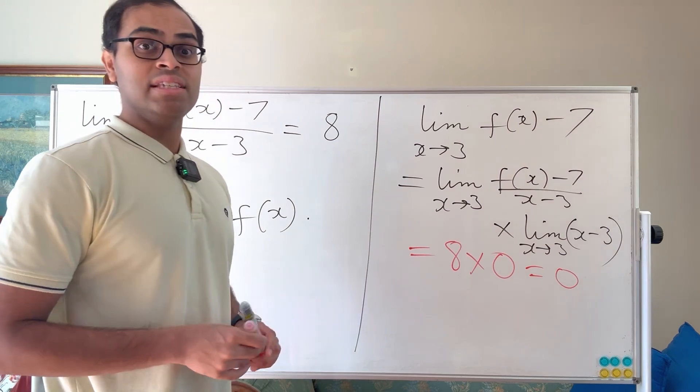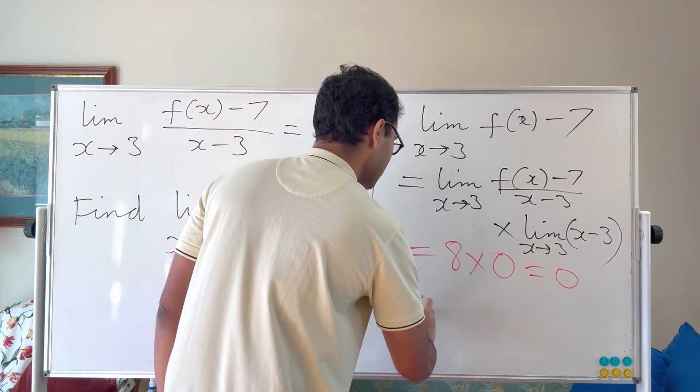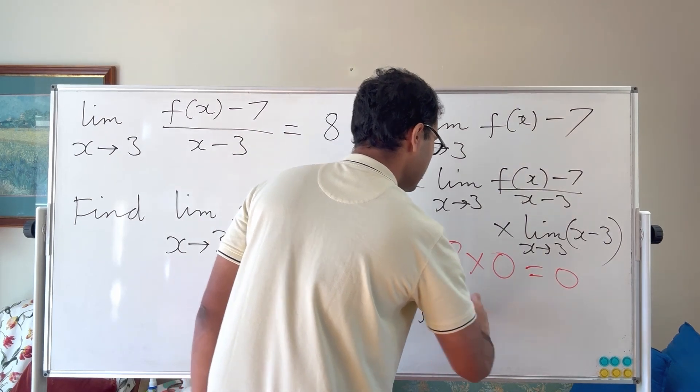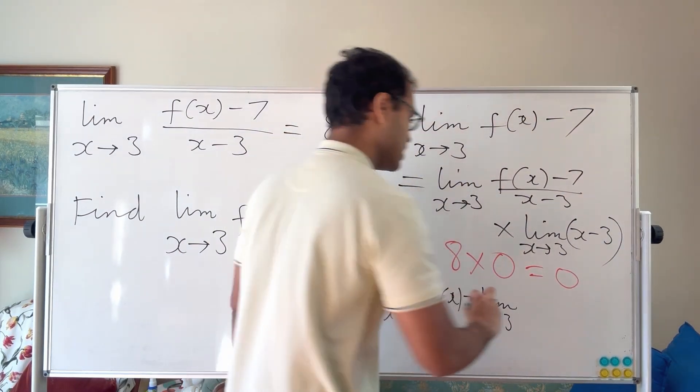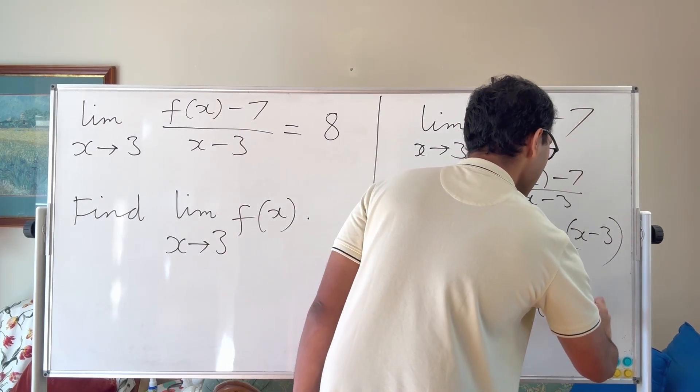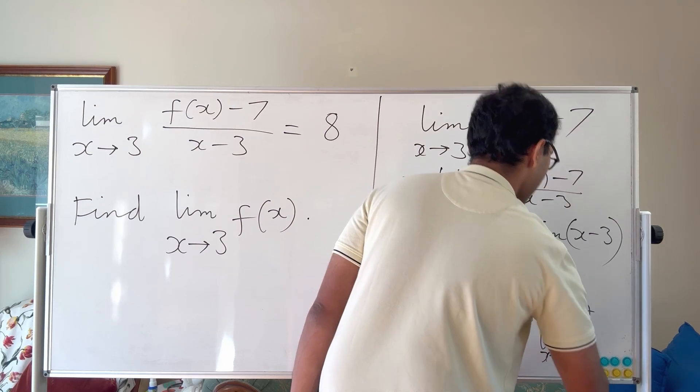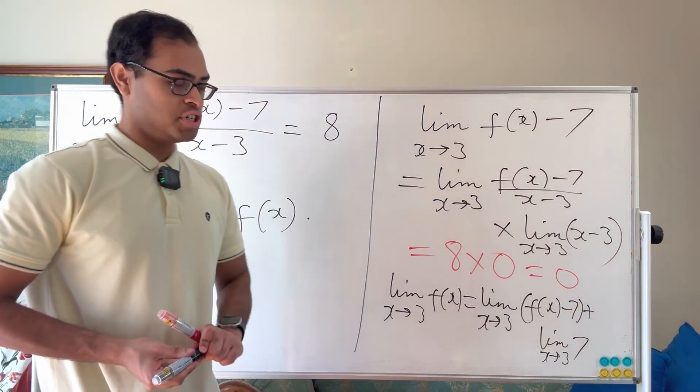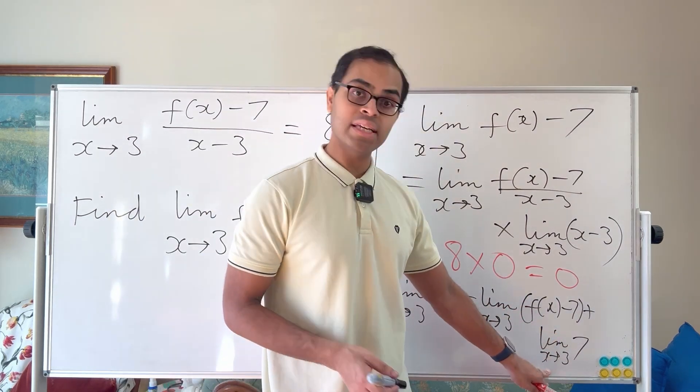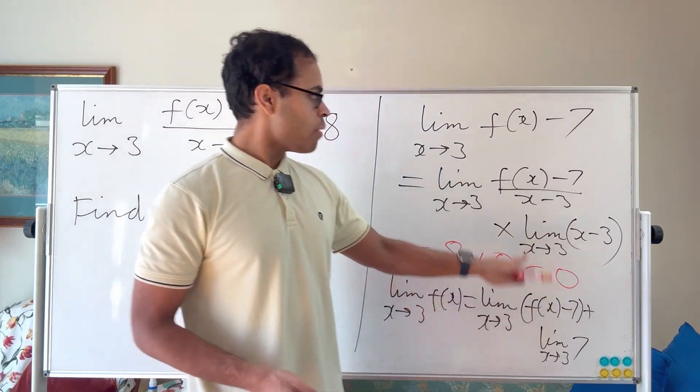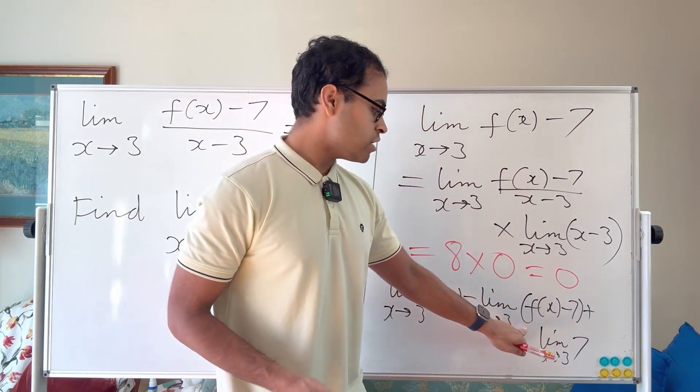And now what we can do is this is the product law for limits. And now we're going to use the sum law for limits that says limit x goes to 3 of f of x is equal to limit x goes to 3 of f of x minus 7, plus limit x goes to 3 of 7. 7 is a constant function. And you see here that this is again by the sum law for limits because both these limits exist. This limit exists by what we just explained. That was by the product law of limits.